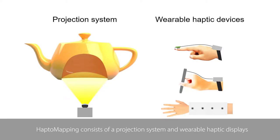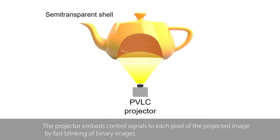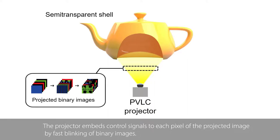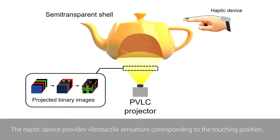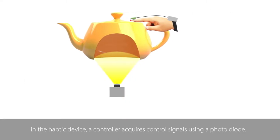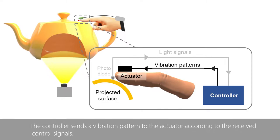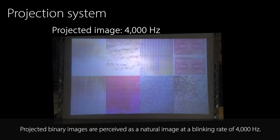HaptoMapping consists of a projection system and wearable haptic displays. The projector embeds control signals into each pixel of the projected image by fast blinking of binary images. The haptic device provides vibrotactile sensations corresponding to the touching position. A controller acquires control signals using a photodiode and sends a vibration pattern to the actuator according to the received control signals.